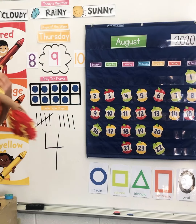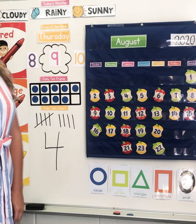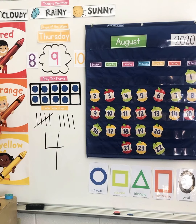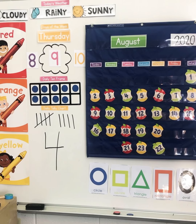Before we go, my friend Brittany would like to go over our colors and shapes with you. Hi, friends! Let's go over our colors. Here we go. Give me a red. Give me an orange. Give me a yellow. Let's say that one more time. Red. Orange. Yellow. Yay, good job!